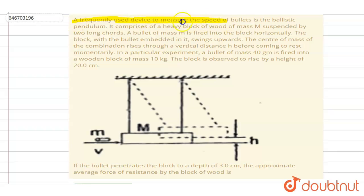We use a device to measure the speed of bullets in a ballistic pendulum. It comprises of a heavy block of mass capital M suspended by two cords. A bullet of mass small m is fired into the block horizontally, and the block with the bullet gets embedded in it and swings upward. The center of mass of the combination rises through a vertical distance h before coming to rest momentarily.